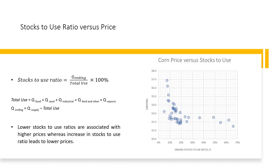To conclude, we discuss the corn stocks-to-use ratio and its price relationship. The stocks-to-use ratio is calculated by dividing ending stocks by total use. Total use is the amount of corn consumed as food and livestock feed, used in industrial processes, planted, and exported. Ending stocks is what is left from total corn supply after subtracting total corn use. Changes in ending stocks are inversely related to price: if total use rises relative to supply, ending stocks decline and price increases, and vice versa.